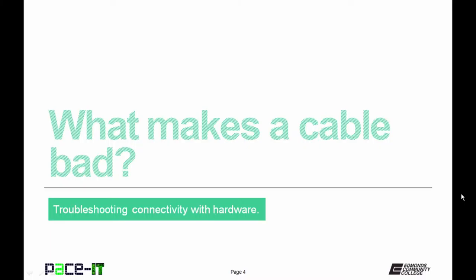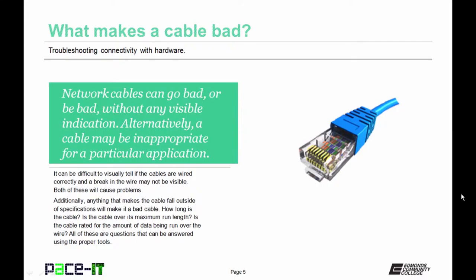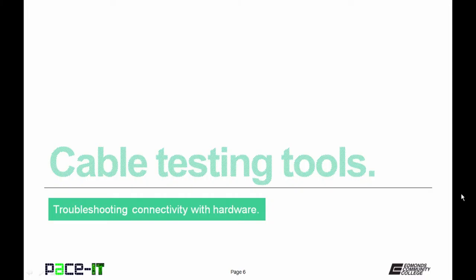We will begin with what makes a cable bad. Network cables can go bad or be bad without any visible indication. Alternatively, a cable may be inappropriate for a particular application. It can be difficult to visually tell if cables are wired correctly, and a break in the wire may not be visible. Both of these will cause problems. Additionally, anything that makes the cable fall out of specification will make it a bad cable. How long is the cable? Is it over the maximum length? Is the cable rated for the amount of data being run over the wire? All of these are questions that can be answered using the proper tools.